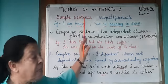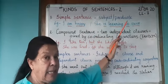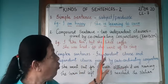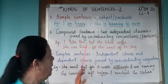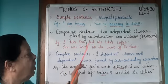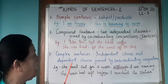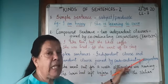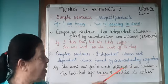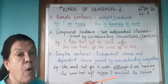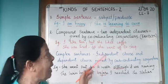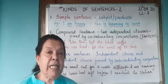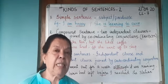So to summarize: a simple sentence has one subject and one predicate. In a compound sentence, two independent clauses are joined by coordinating conjunctions. In a complex sentence, you have an independent clause and a dependent clause joined by subordinating conjunctions — such as 'although', 'before', 'when', 'where', 'why'. I hope you have understood. We will be doing some exercises for further practice. Till then, take care.